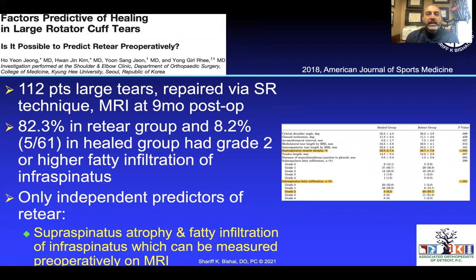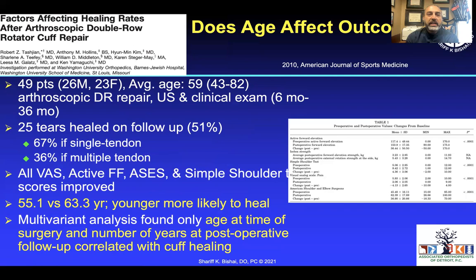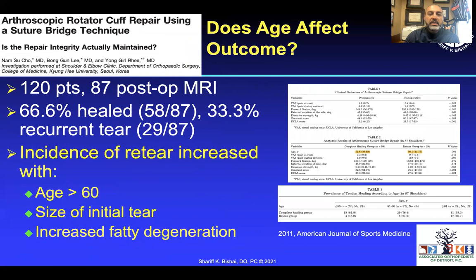Moving into large tears: in a study of 112 large tears repaired with single-row technique, the re-tear group was 83% and the healed group only 8.2%. Independent factors included supraspinatus atrophy and fatty infiltration of the infraspinatus on preoperative MRI. Looking at healing rates in double-row repairs — all VAS, active forward flexion, ASES, and simple shoulder scores improved, but patients that healed most often had a single tendon tear versus a multiple tendon tear. Bigger tears, more fatty infiltration, and more than one tendon involved are harder to fix than we once thought.